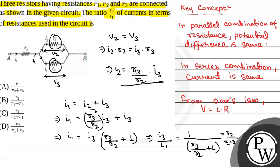So the correct option will be option B R2 by R2 plus R3.